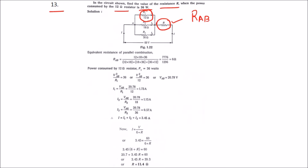First, let us find R_ab, that is the equivalent resistance. Since these three are connected in parallel, we will find the equivalent resistance using the formula: 12 × 18 × 36, whole divided by (12 × 18 + 18 × 36 + 36 × 12). By simplifying that, we get R_ab equal to 6 ohms. We can also simplify the figure.